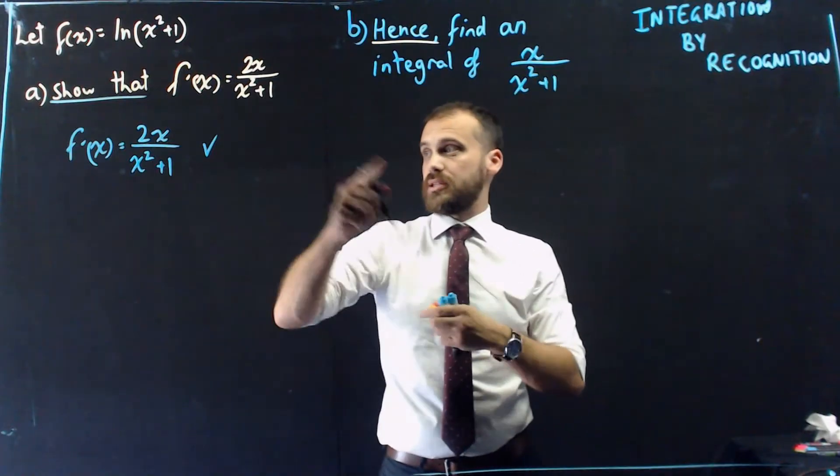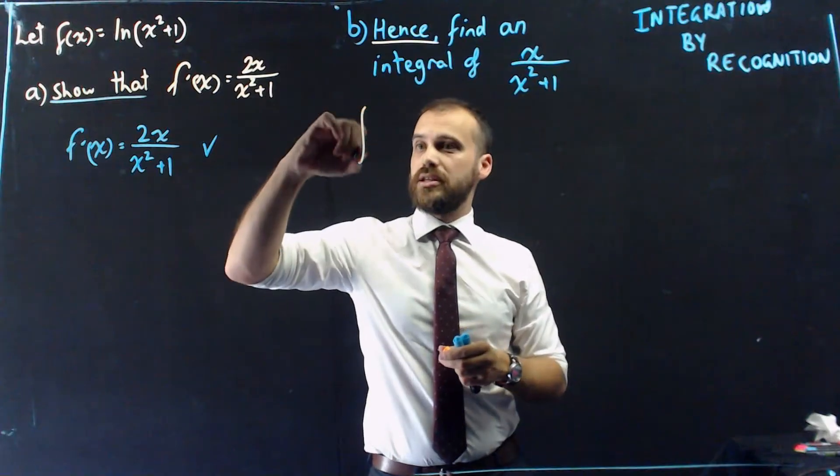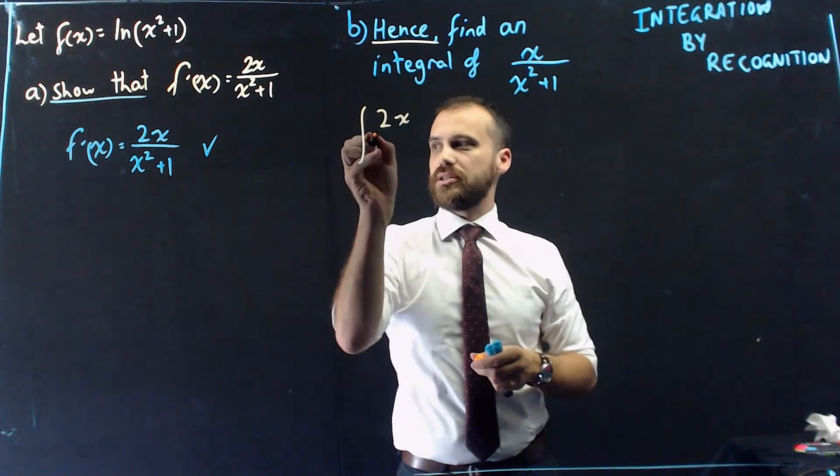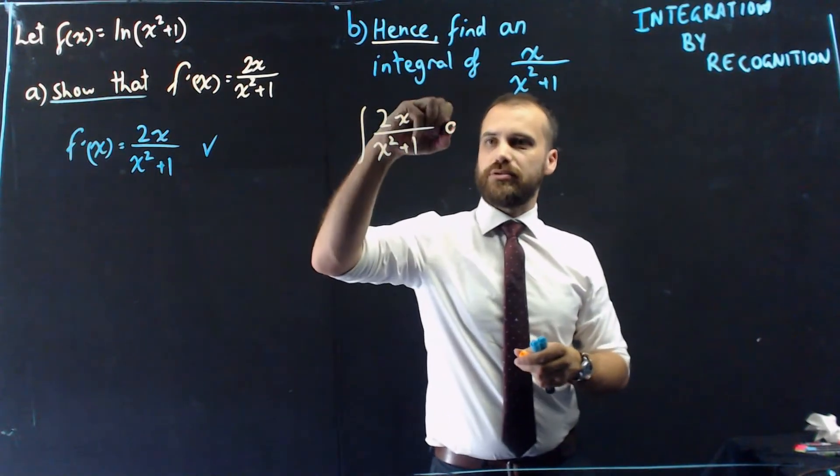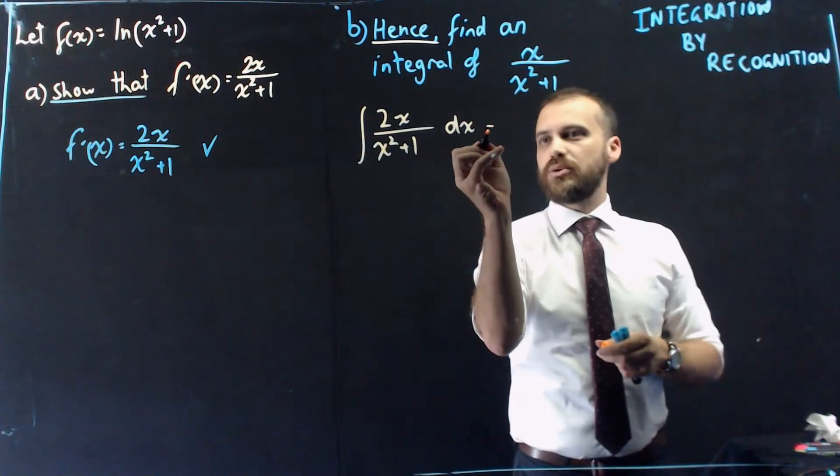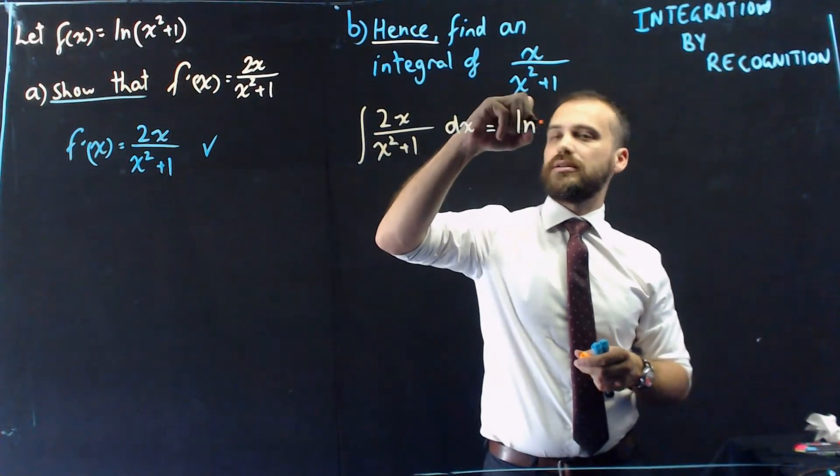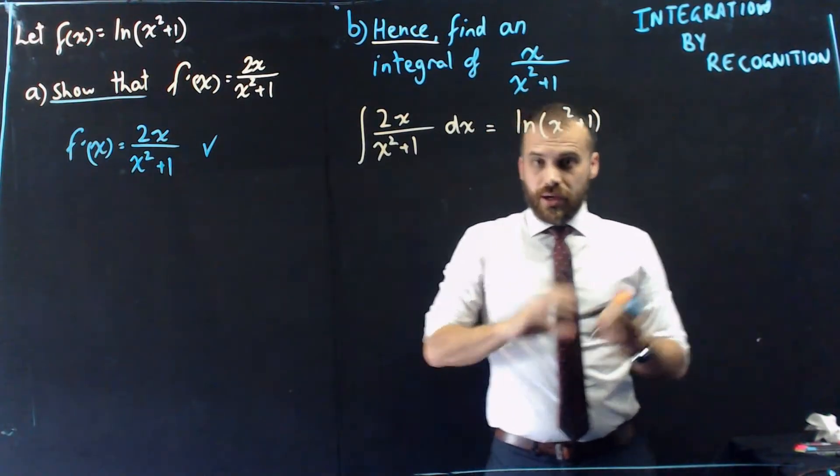So the first step here is to rewrite what you've just done, but as an integral. So we can say that the integral of the thing we just found, 2x on x squared plus 1, with respect to x, is going to be equal to whatever we started with: ln x squared plus 1.